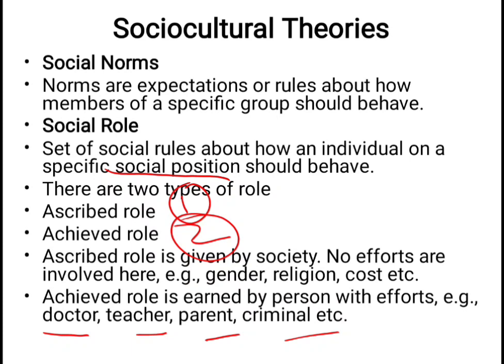Each role has demands, and our behavior is dependent on our social role. If we are a doctor, we perform according to that role; if we are a teacher, we perform according to that role's rules and standards; as a parent, we perform our responsibilities accordingly. So the main theme of socio-cultural theory is that our culture decides which behavior we will perform. Our behavior is dependent on our cultural values, belief system, norms, rules, and standards which our culture decides.